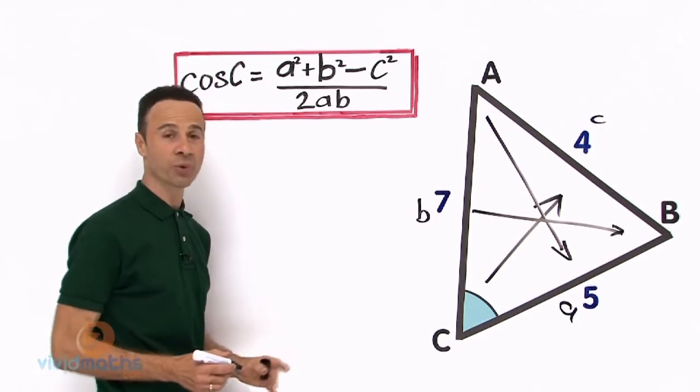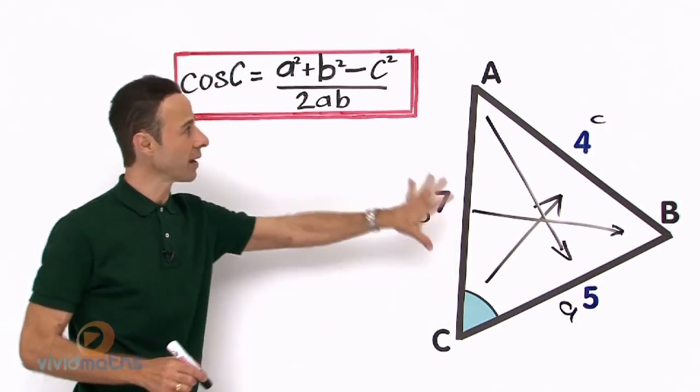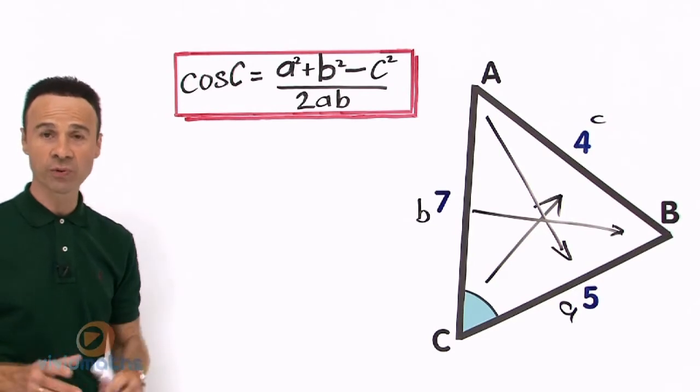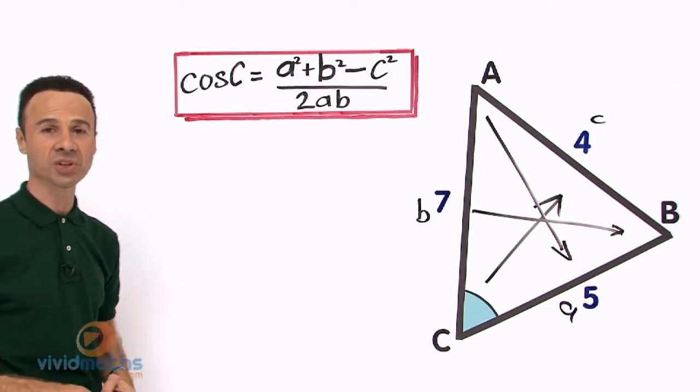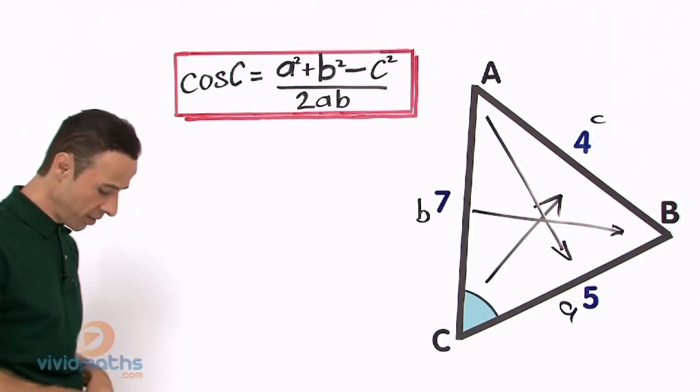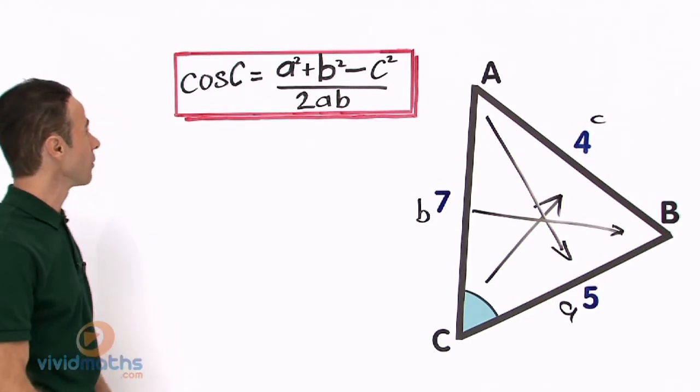We have the angles already labelled, all we got to do is drag and drop that into the formula, the cos rule formula, and find the angle C. Now let us put the values in.